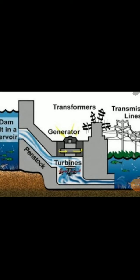When this water is released from a dam, a lot of energy is released. This energy is then used for running special machines called turbines, which generate electricity.